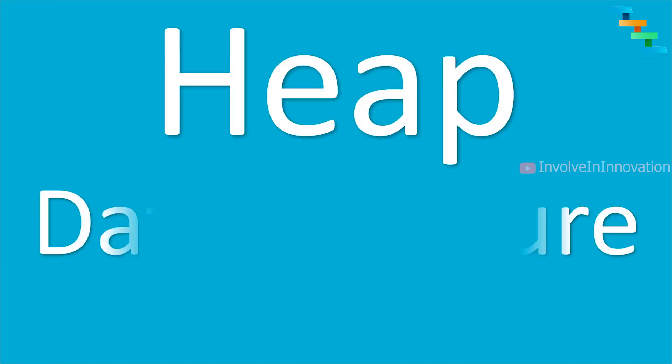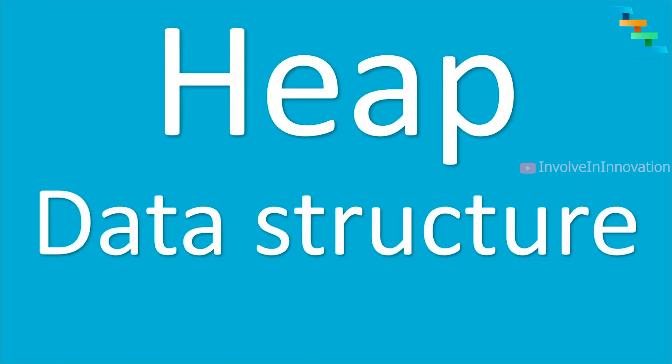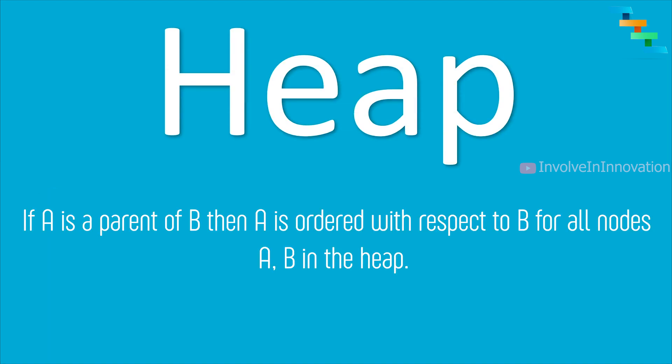In this lesson we will see about heap data structure. Heap is a specialized tree-based data structure which is essentially an almost complete tree that satisfies this condition: if A is a parent of B, then A is ordered with respect to B for all nodes A, B in the heap. We will see this definition in detail with the max and min heap.